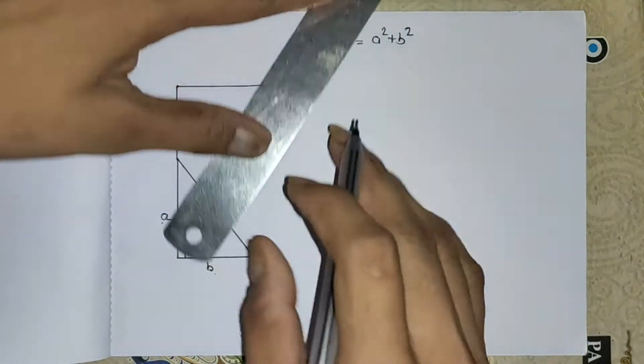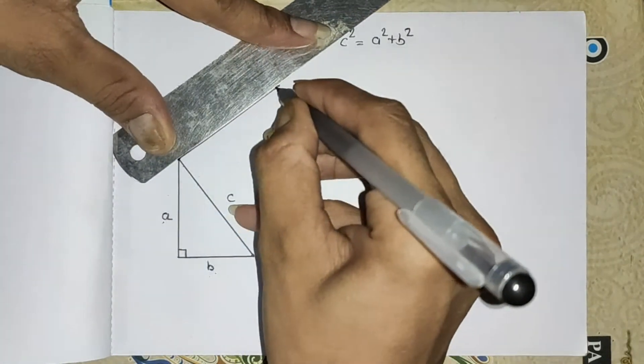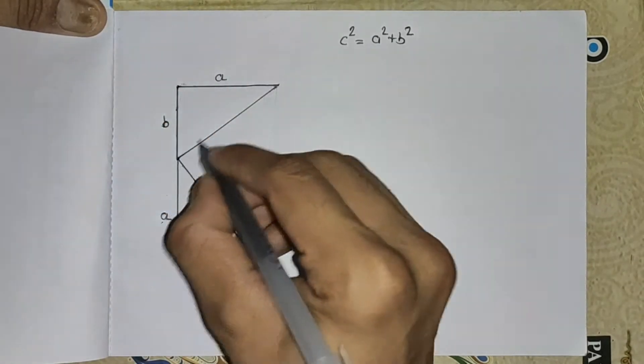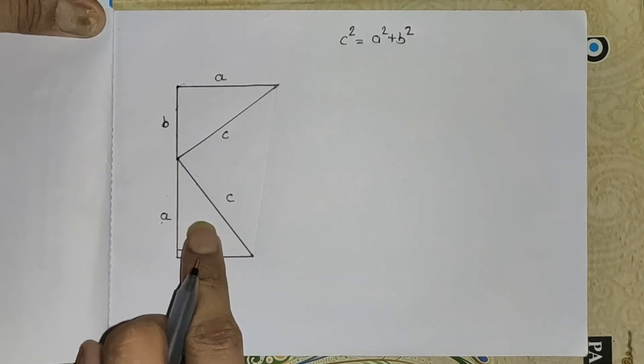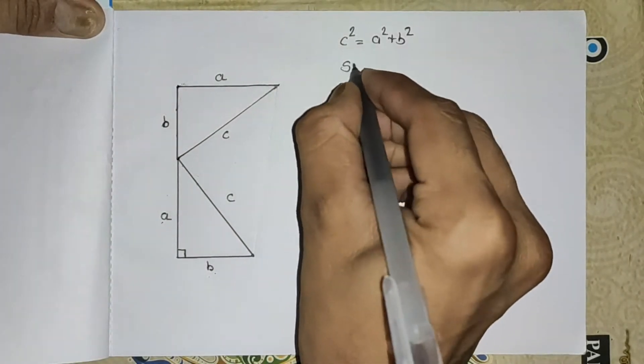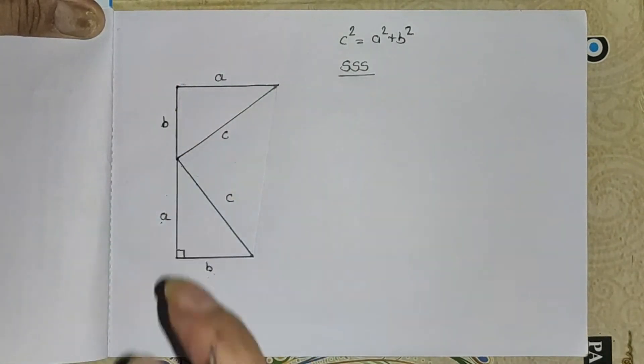And another triangle, this one length b, this one a, and this one c. So this triangle and this triangle are equal because according to side-side-side theorem, both triangles have equal length, so both triangles have equal area.